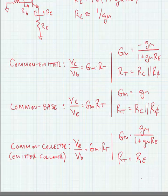As with MOSFET amplifiers, the common emitter amplifier in the bipolar case can be used for voltage or current gain. The common base amplifier can only give us voltage gain with no current gain, and the common collector amplifier can only give us current gain with no voltage gain. The common collector or emitter follower is commonly used as a voltage buffer.